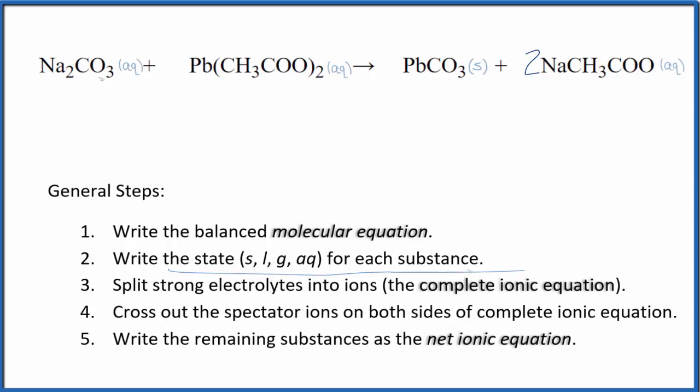Now we can write the state for each substance. Compounds with the carbonate ion are usually insoluble, but sodium carbonate is soluble - sodium group 1, potassium carbonate they'll be soluble. Acetates are very soluble. When we get to lead(II) carbonate, carbonates are often insoluble and certainly lead often forms insoluble compounds. So this lead(II) carbonate, you look it up on a solubility table, you'll find that it's a solid.